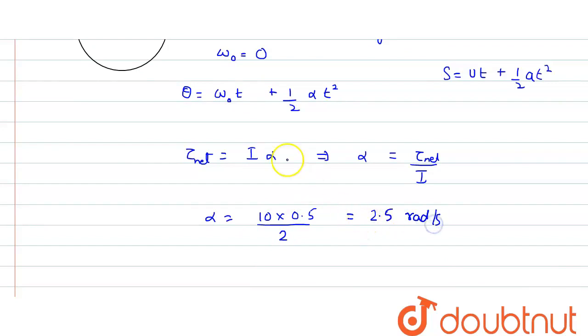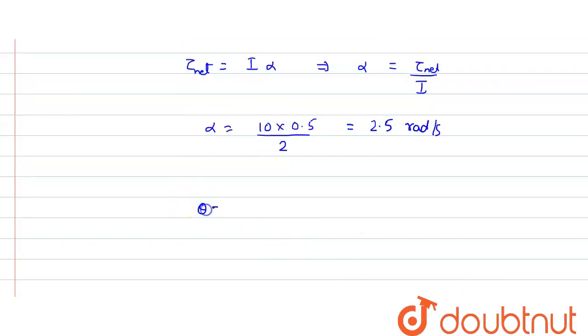Now we can put the value here. So θ would be ω₀ into t, starting velocity is 0 angular velocity, plus half into 2.5 into what is the time? Time is given as 2 seconds, so 2 squared would be equals to 4.